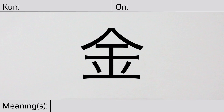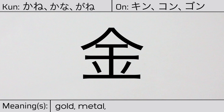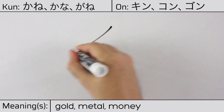Welcome to this lesson on Japanese kanji. Today, we'll be discussing this character. This kanji has kunyomi or Japanese readings of kane, kana, or gane, and it has onyomi or Chinese readings of kin, kon, or gong. This character has the meanings gold, metal, or money. Here is the stroke order.